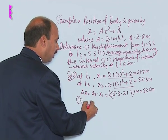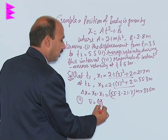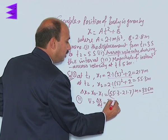If you take second part, average velocity is equal to Δx upon Δt. This already you have calculated, 33.6 divided by 5 minus 3.